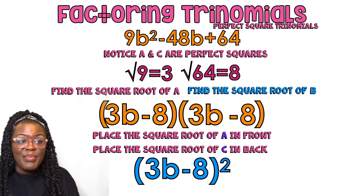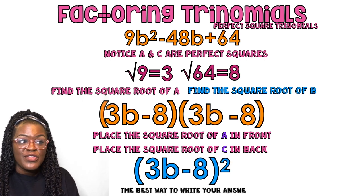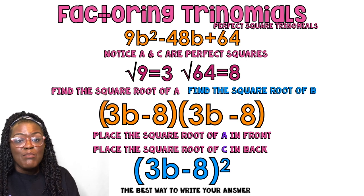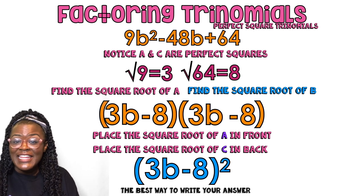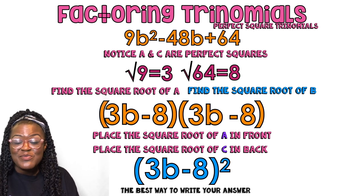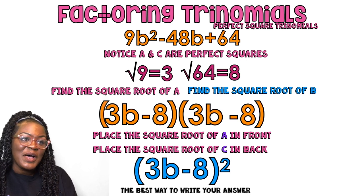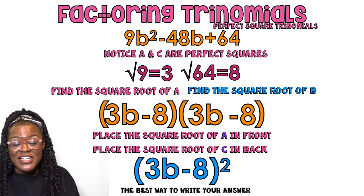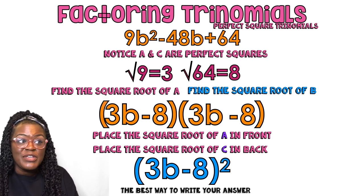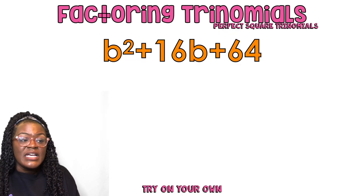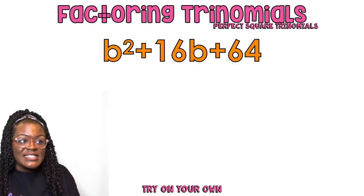We use a minus because there's a minus in the problem. The best way to write your answer is 3b minus 8, quantity squared. Most teachers will like it written that way. It should be super easy — about 10 seconds.